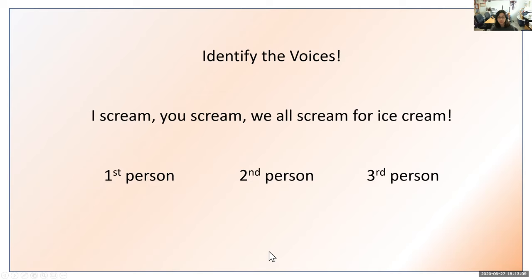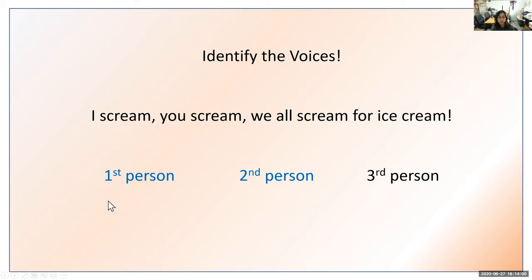This next one has two answers: I scream, you scream, we all scream for ice cream. Which two voices does this sentence represent? It represents both first person and second person. First person includes I, my, mine, we — and we have both I and we here. We also have second person because of the word you. So I and we are first person, and you is second person — therefore this is first person and second person.